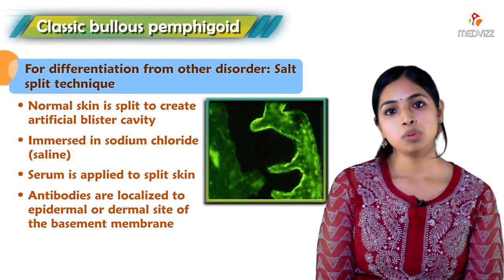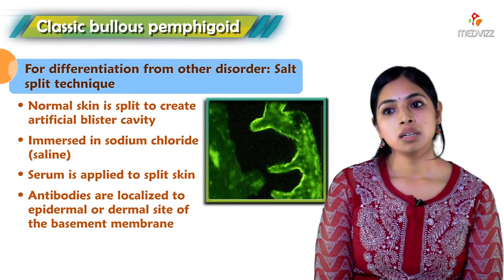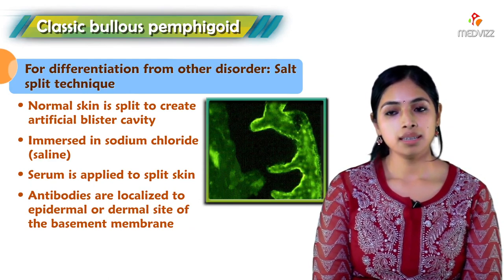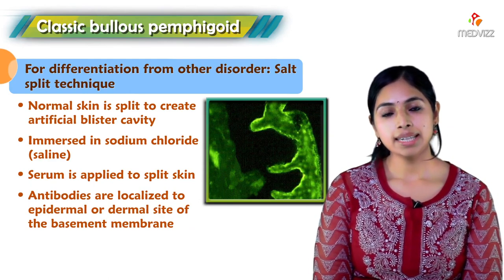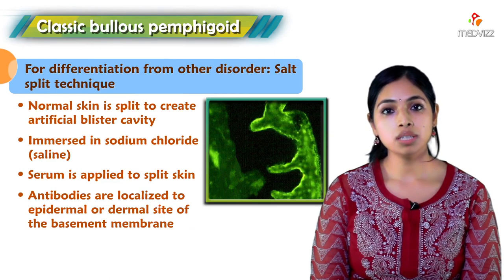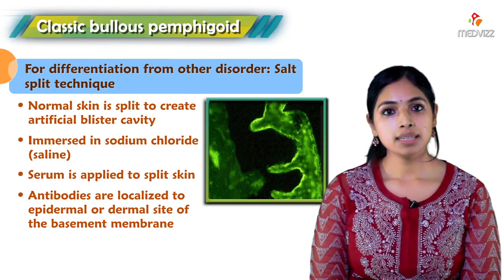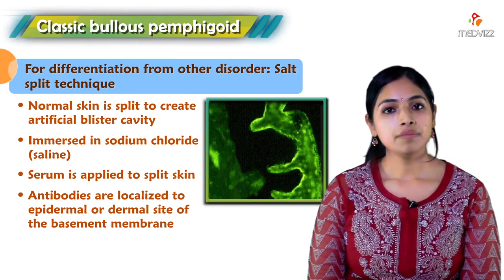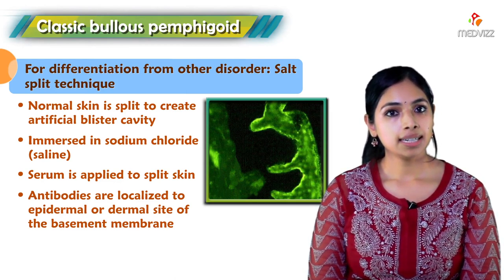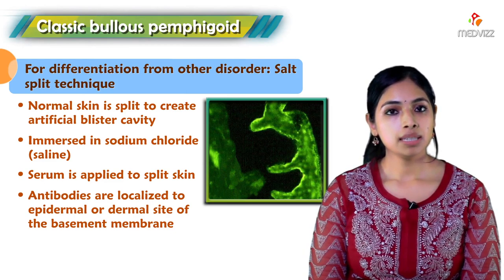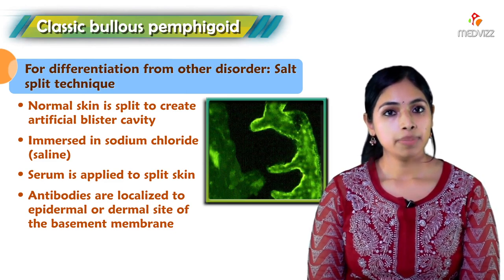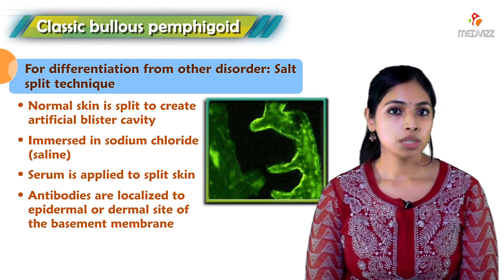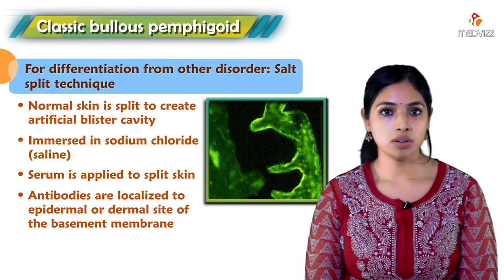To differentiate bullous pemphigoid from other disorders such as epidermolysis bullosa acquisita, we can use a technique called the salt split technique. The specimen is kept in sodium chloride and we observe where the antigens are tagged — either to the epidermal side or the dermal side of the basement membrane zone. Based on this, we can differentiate bullous pemphigoid from other immunobullous disorders.